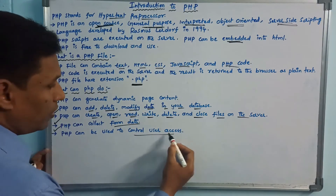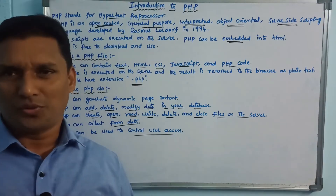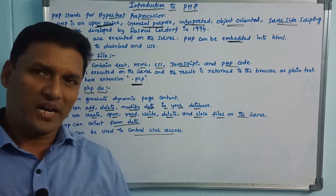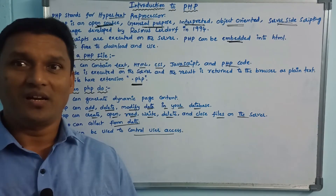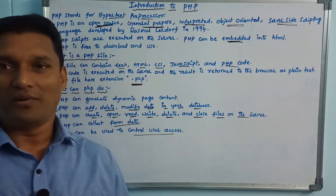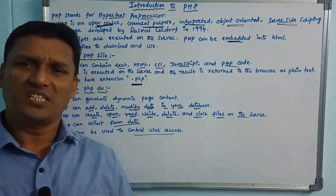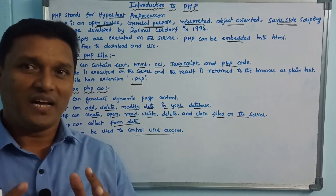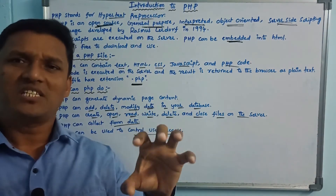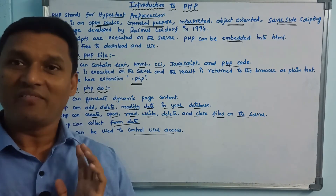PHP can be used to control user access. For example, consider a bank database — if you are a user with a password, you can connect to the server and database. After logging in, you can perform operations like transferring funds or recharging. When data is changed, the server and database are updated through server-side scripting with PHP.